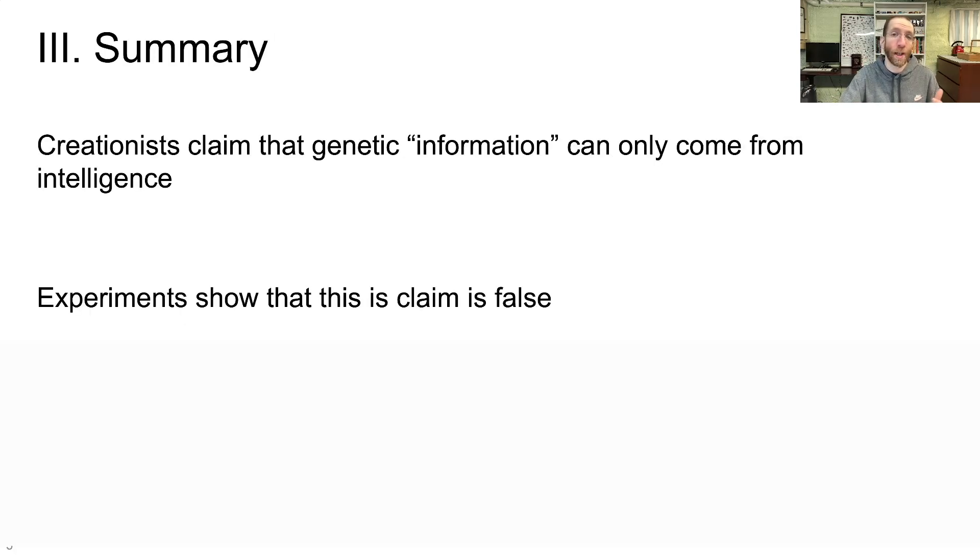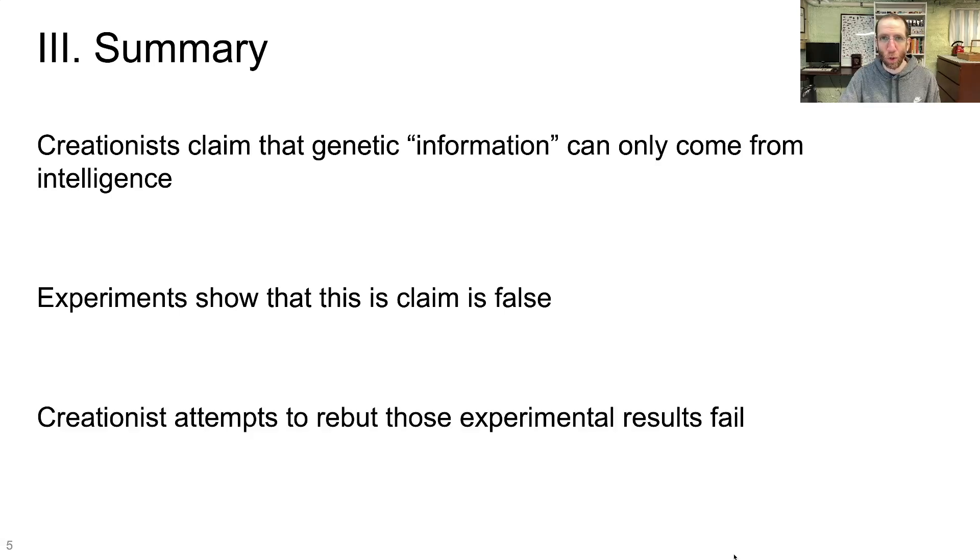So, in summary, creationists claim that genetic information can only come from an intelligent source, but experiments directly show that this claim is false. It's not more complicated than that. It's been directly refuted. Creationist attempts to rebut these experimental results fail. They just are unable to refute these experiments, and therefore their claim is false.